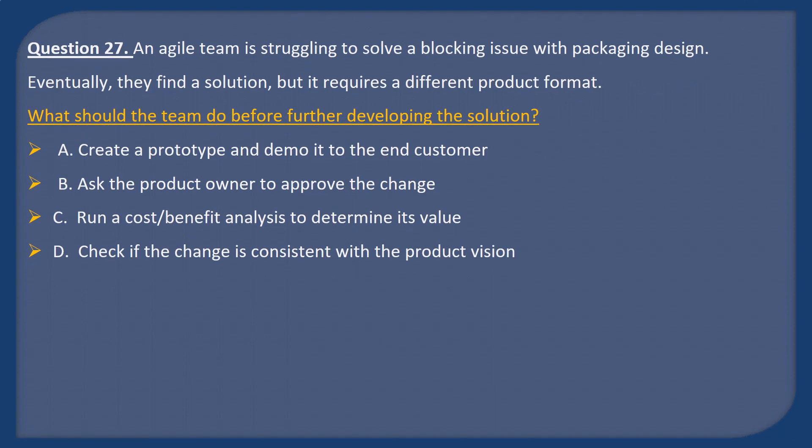Question 27. An Agile team is struggling to solve a blocking issue with packaging design. Eventually they find a solution but it requires a different product format. What should the team do before further developing the solution? A: Create a prototype and demo it to the end customer. B: Ask the product owner to approve the change. C: Run a cost-benefit analysis to determine its value. D: Check if the change is consistent with the product vision.